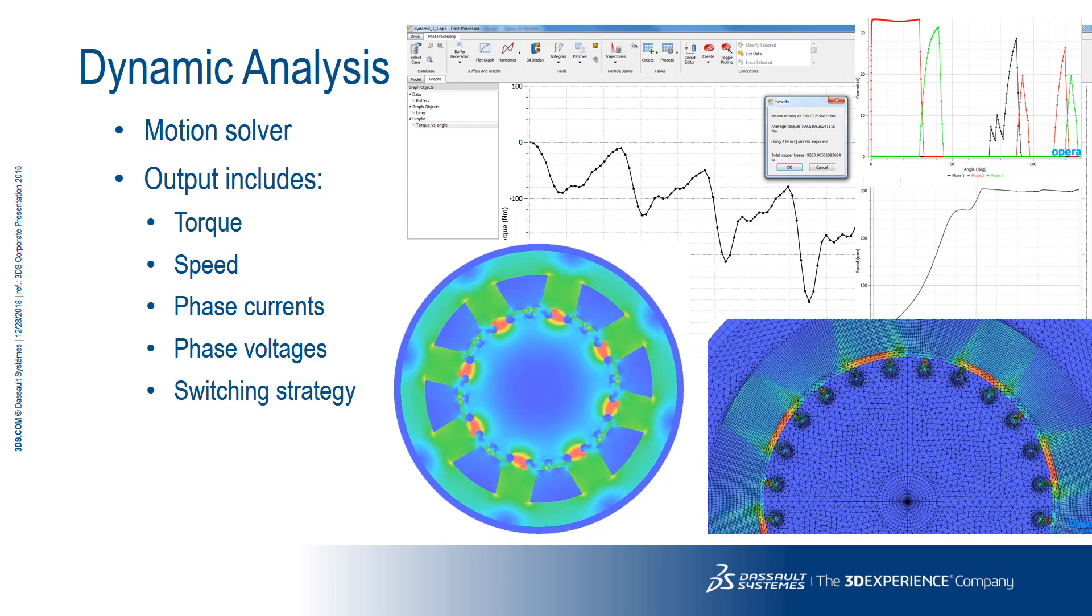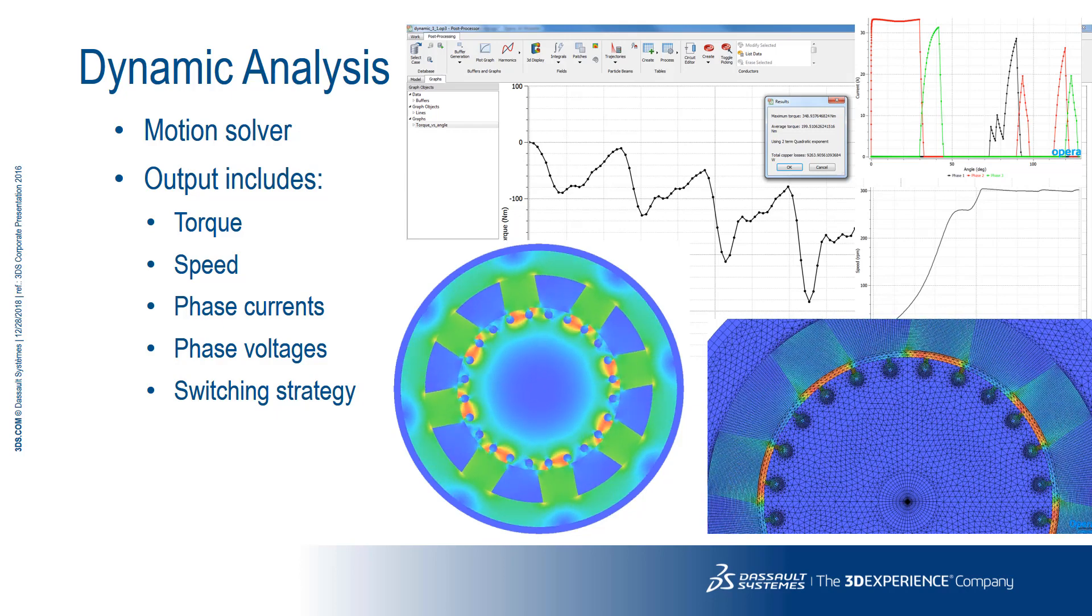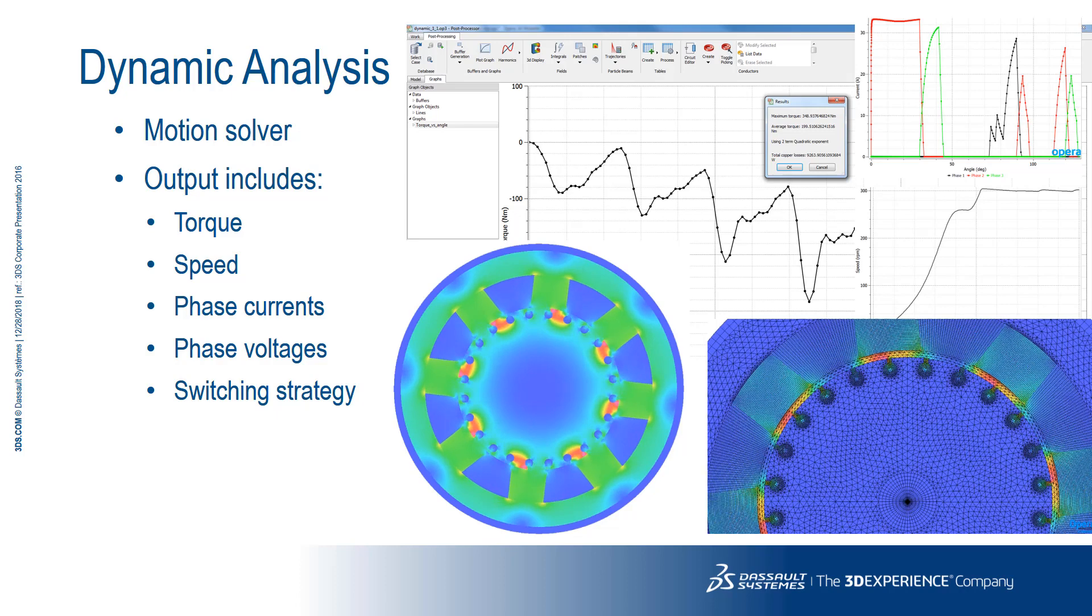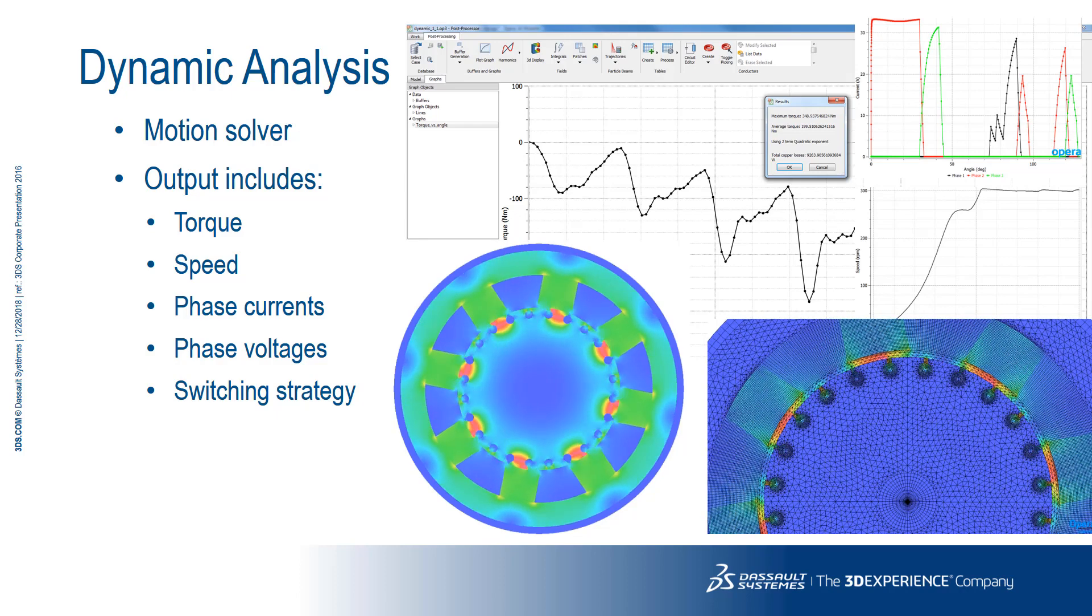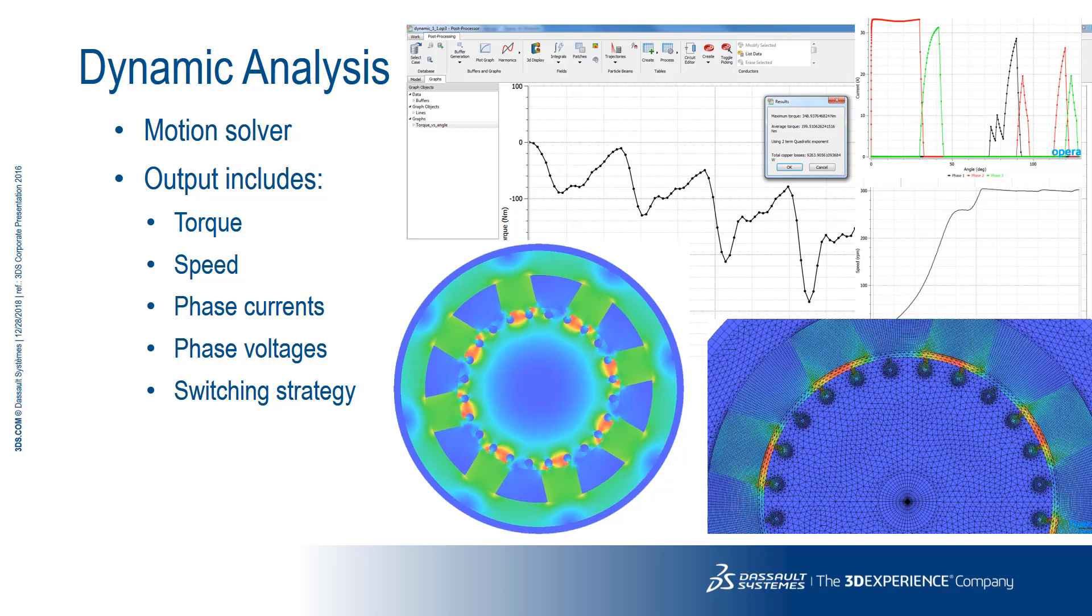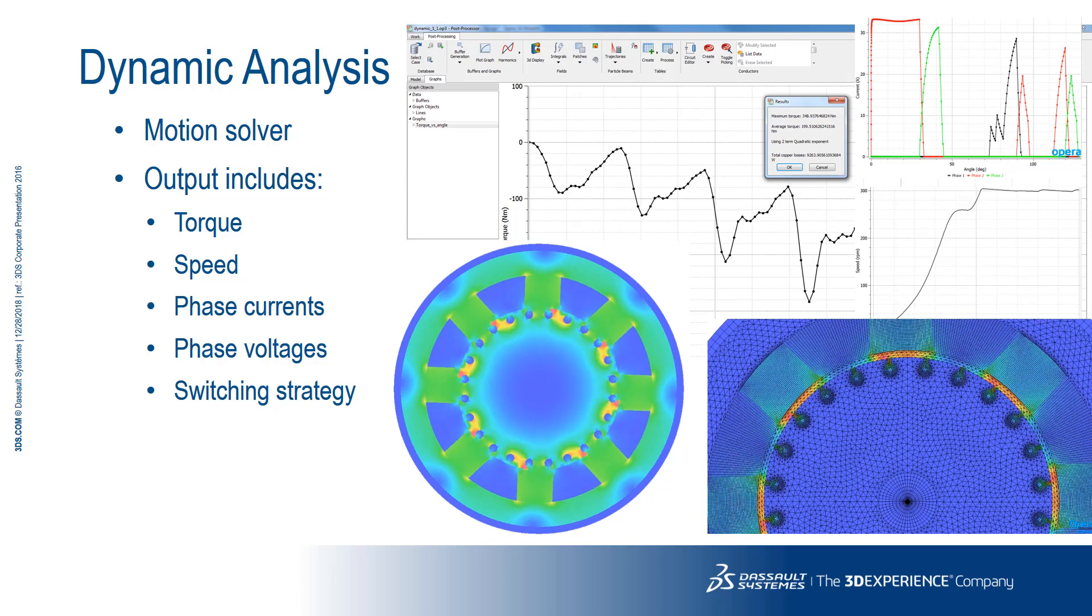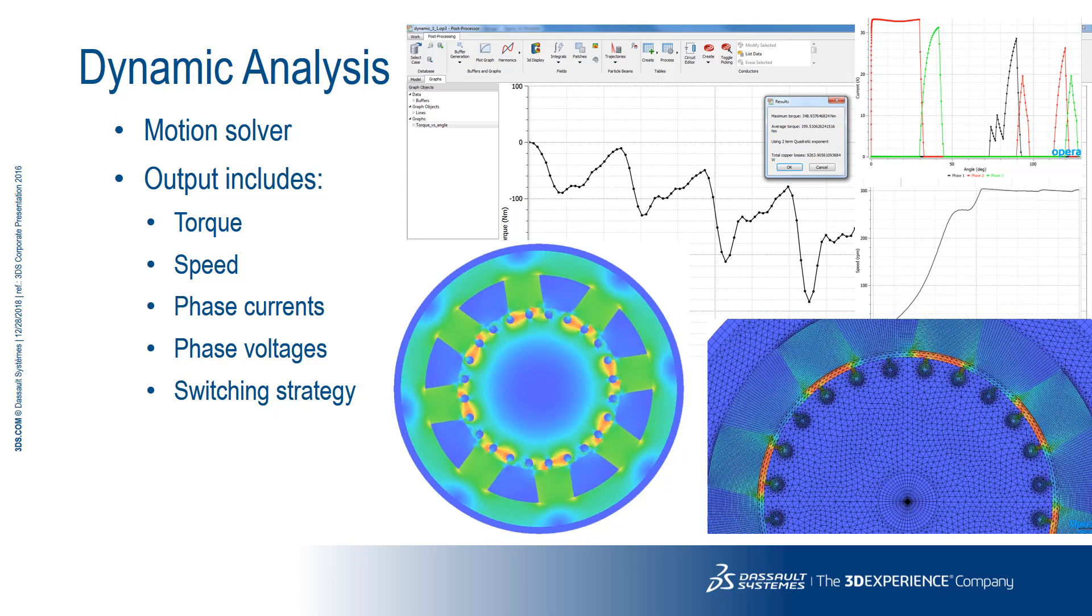The dynamic analysis option uses the mechanically coupled option of the motional analysis solver. Based on the geometry of the machine and on the number of phases selected, the switching strategy is calculated. The post-processing step includes the output of torque, speed, phase currents, phase voltages, and switching strategy.